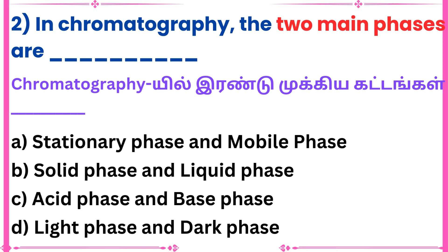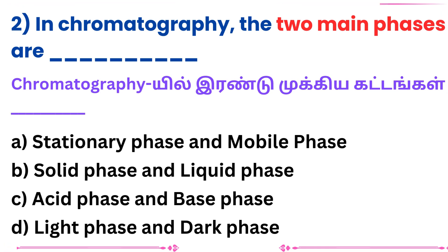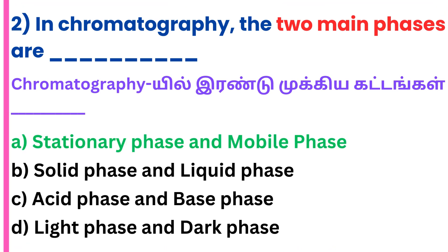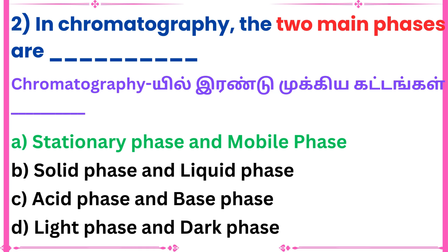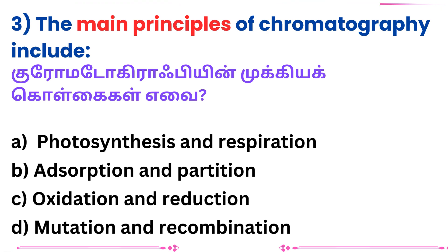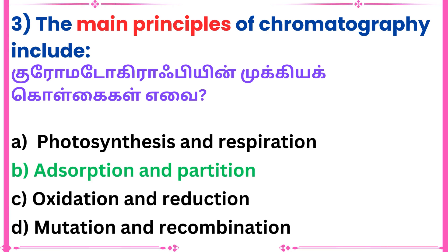Second question: In chromatography, the two main phases are — Answer: Stationary phase and mobile phase. Third question: The main principles of chromatography include — Answer: Adsorption and partition.